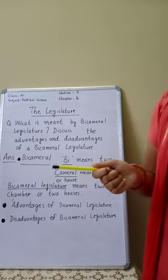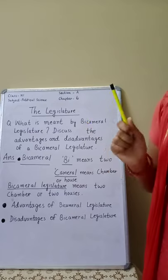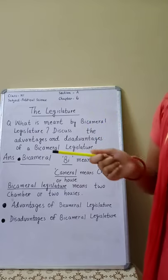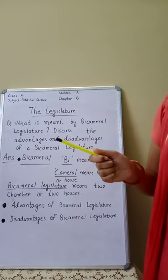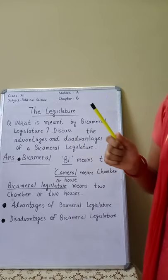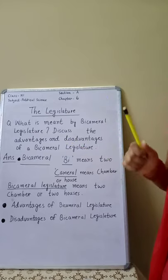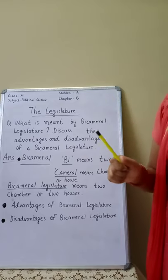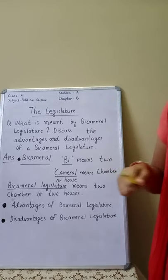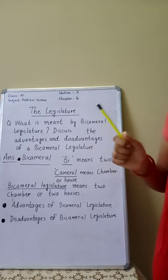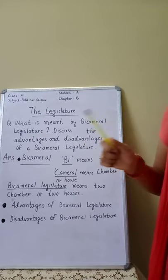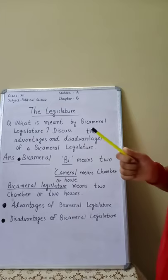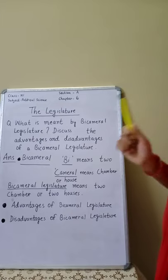Third point: representation of different interests. Bicameralism provides a convenient means of giving representation to different groups and interests. Distinguished people in the fields of arts, science, literature, and minorities can be nominated.